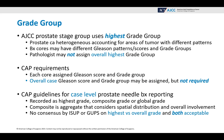AJCC prostate stage group uses the highest grade group. Prostate cancer is heterogeneous, accounting for areas of tumor with different patterns. The biopsy cores may all have different Gleason patterns, scores, and grade groups. The pathologist may not assign the overall highest grade group. Per the College of American Pathologists CAP requirements, each core must be assigned a Gleason score and grade group. The overall case Gleason score and grade group may be assigned but is not required — the pathologist is not making a mistake.